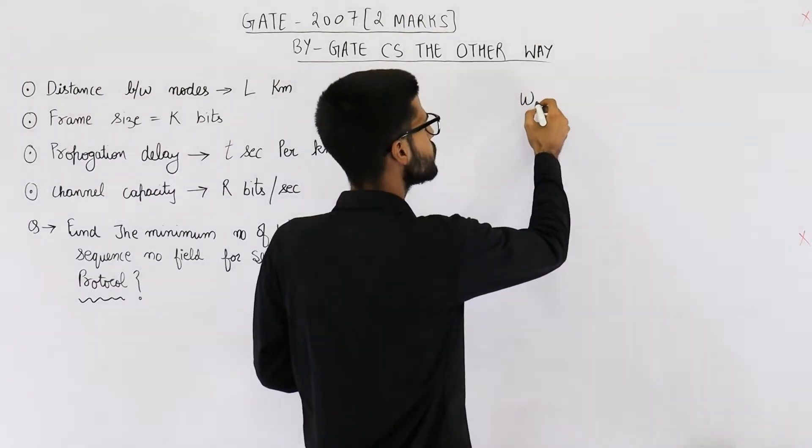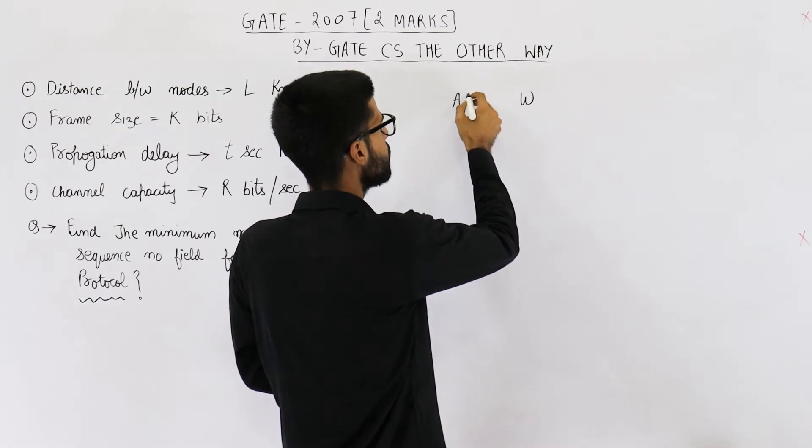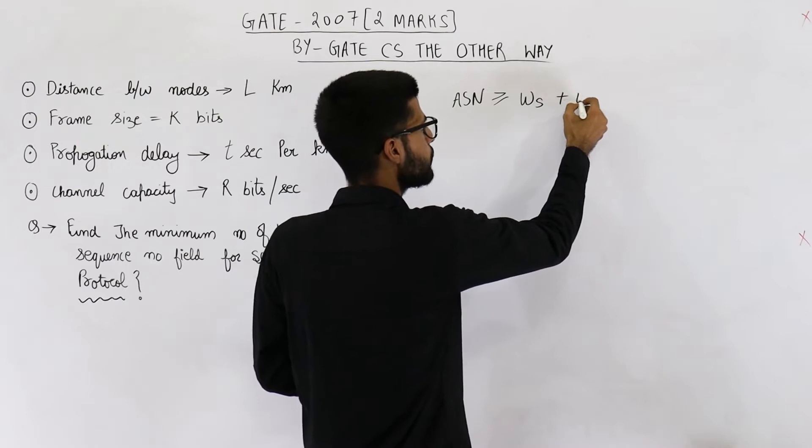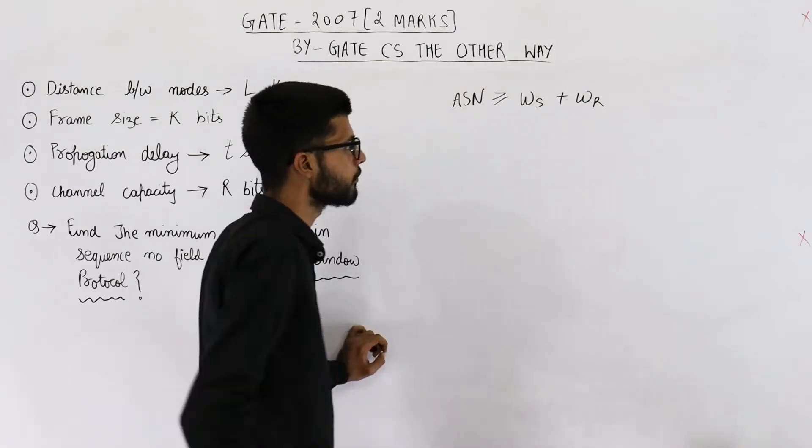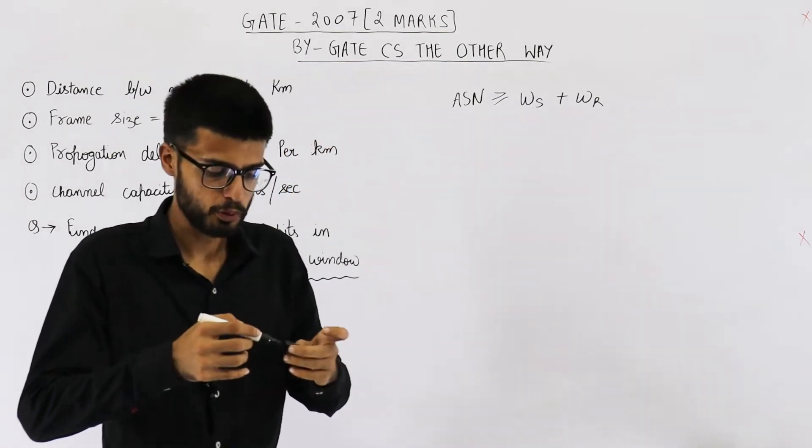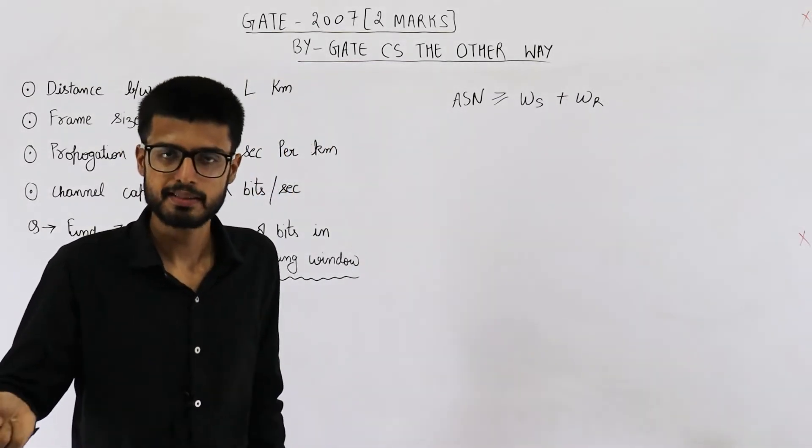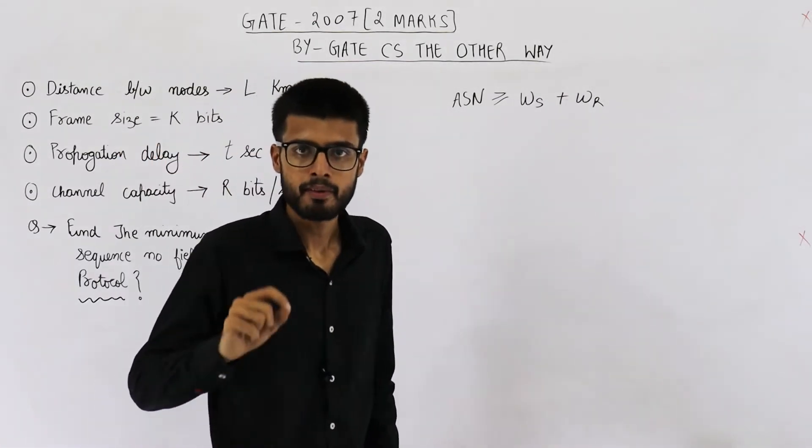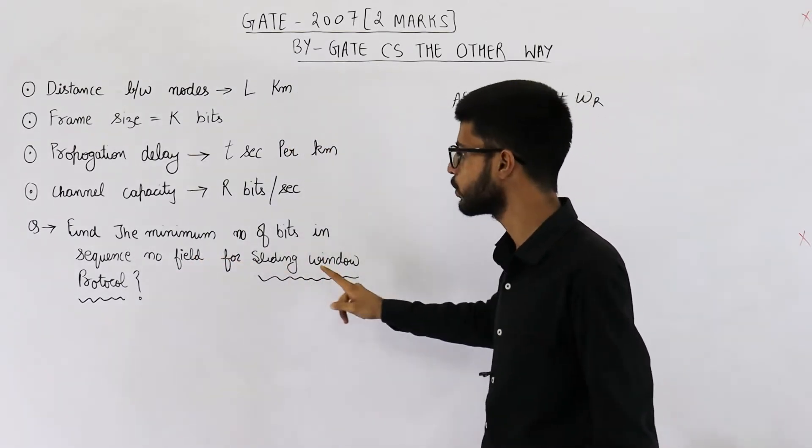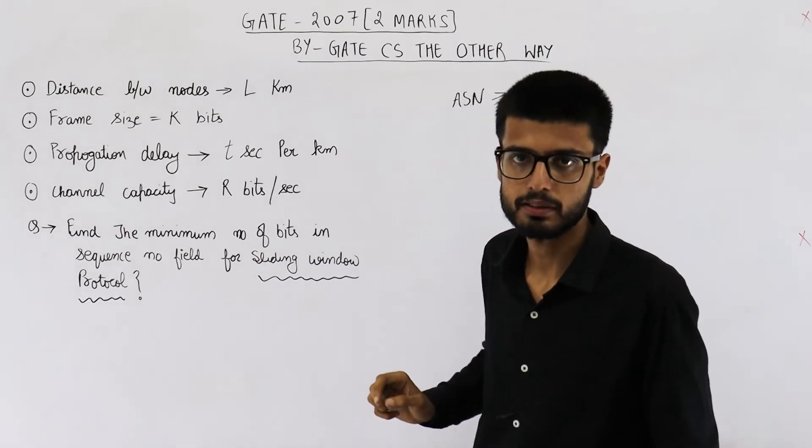Normally, we use the formula available sequence numbers must be greater than or equal to sender window size plus receiver window size. The value of receiver window size depends on what kind of protocol is being used. Is it SR or is it go-back-N? But here they are not mentioning any of the practical protocols.